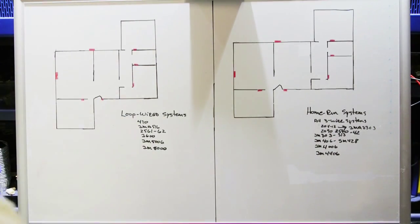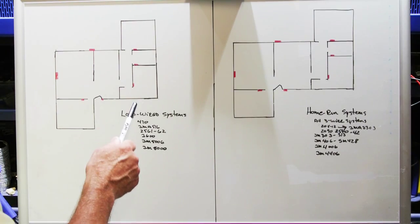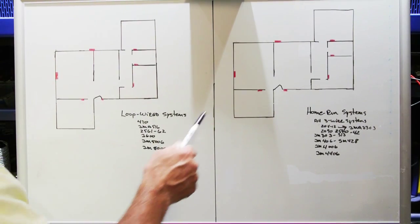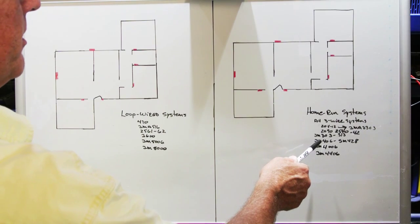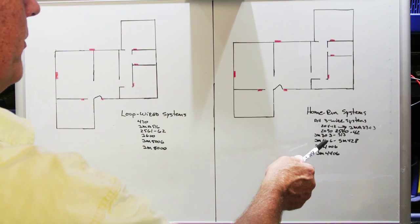The reason that it's important to understand this is if you're looking to upgrade your system or you're looking to do troubleshooting on your system, you need to know whether your system is home run or loop wired. So we're going to start with home run systems because home run systems are the majority of the systems that are out there.